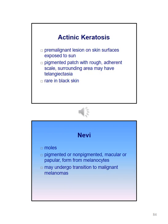Nevi, also known as moles, consist of pigmented or non-pigmented macular or papular forms from melanocytes. They may undergo transition to a malignant melanoma, so it is important to monitor these.